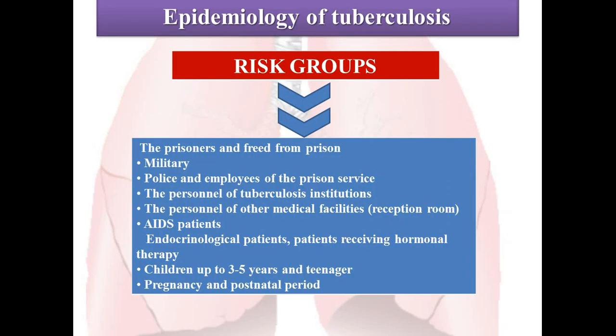Risk groups include prisoners and those freed from prison, military, police, and employees of the prison service; personnel of tuberculosis institutions and other medical facilities including reception rooms and AIDS wards; children up to 3–5 years of age; teenagers; patients receiving hormonal therapy; and pregnant women in the perinatal period.